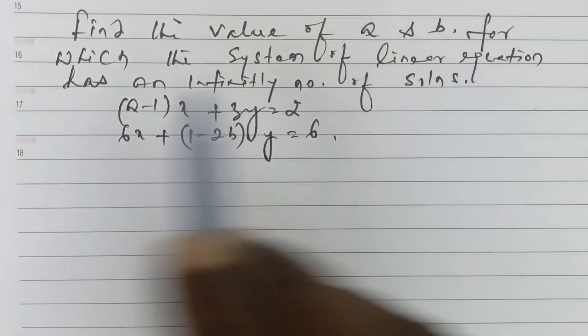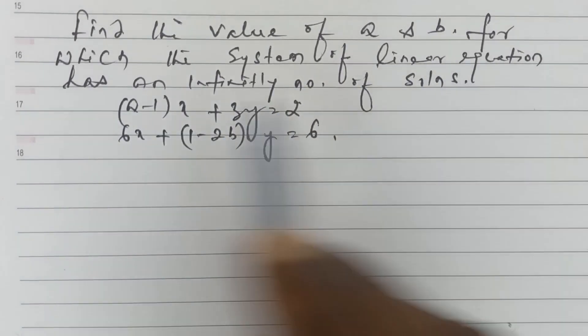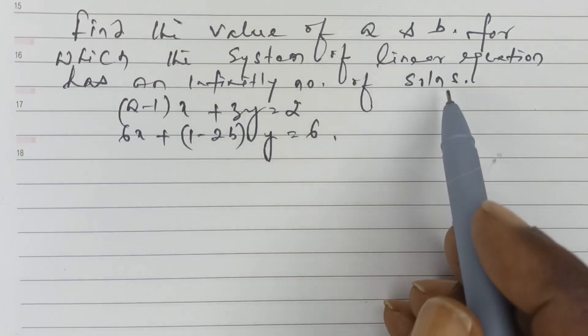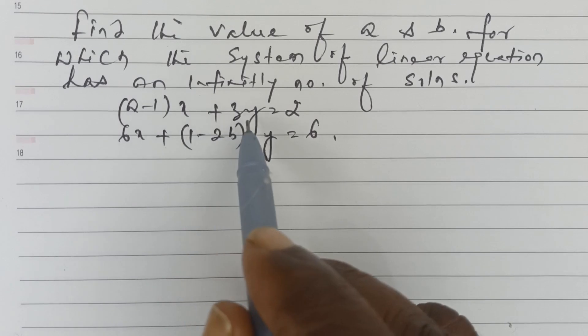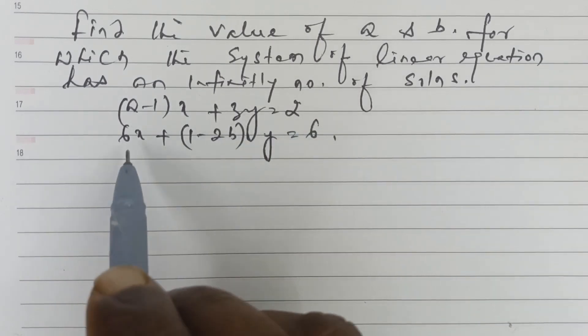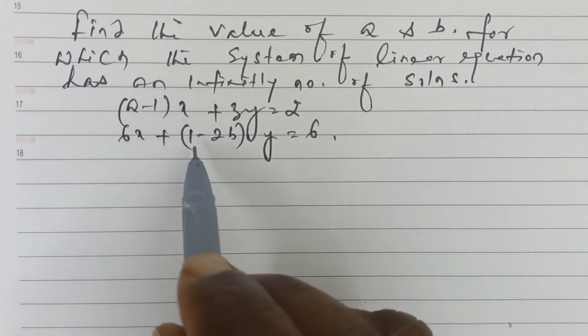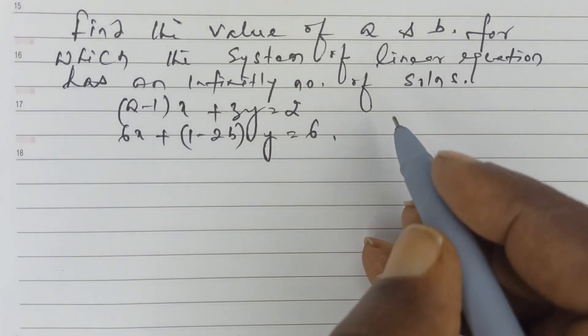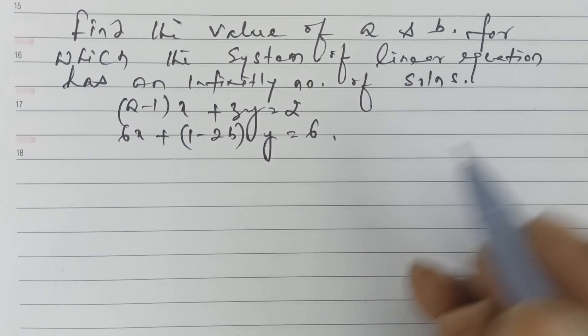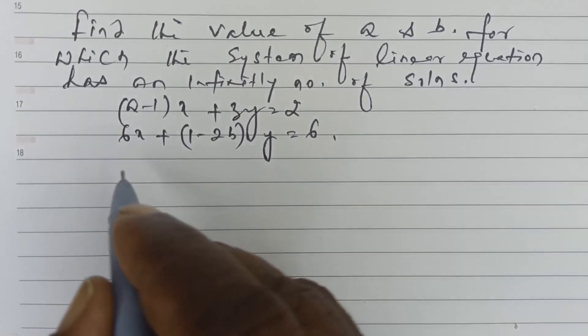Find the value of a and b for which the system of linear equations has an infinitely many solutions. The equations are (a-1)x + 3y = 2 and 6x + (1-2b)y = 6. The condition for infinitely many solutions is that the ratios should be equal.